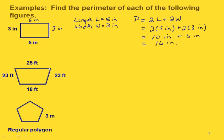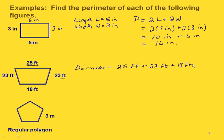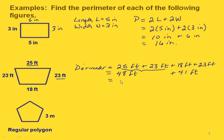For this next one, this is a trapezoid, but all we need to do is add up our four values. Our perimeter equals 25 feet plus 23 feet plus 18 feet plus 23 feet. Adding 25 plus 23 gives us 48, and 18 plus 23 gives us 41 feet. Adding 48 and 41, we get 89 feet altogether.